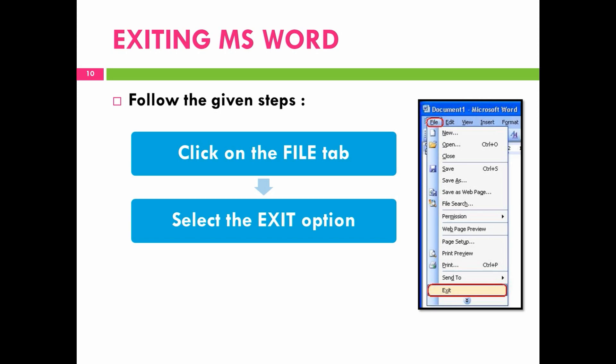Last is exiting MS Word. Follow the steps given: click on the file tab and then select the exit option. As you can see in this image, click on the file tab, then you will get this menu and select the exit option to exit or close the MS Word window. I hope you all have understood the topics well. Thank you children.